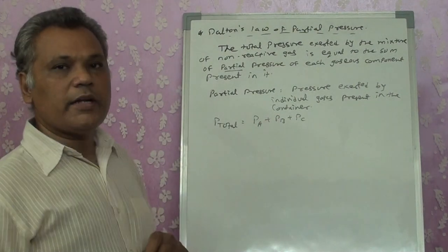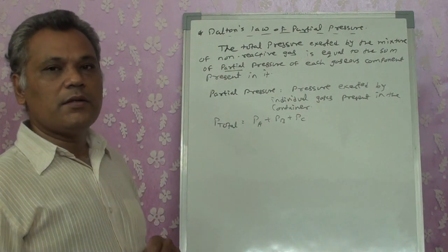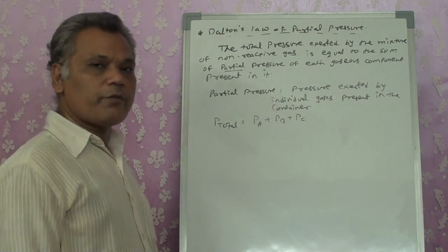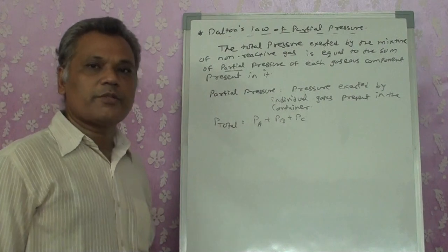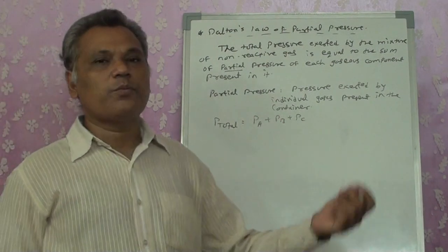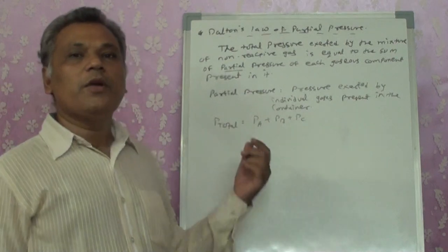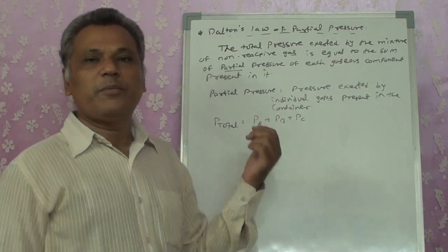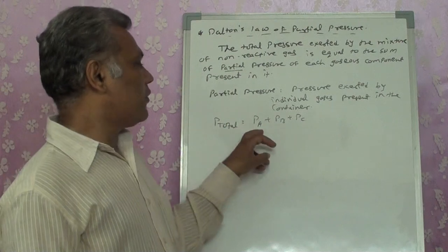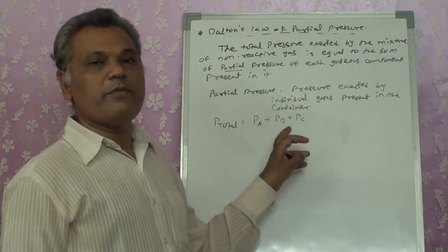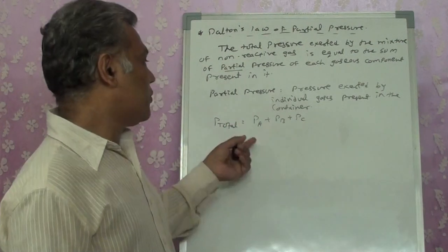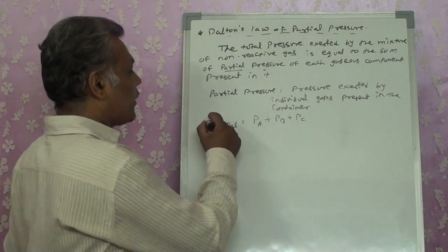So this law says: P_total inside the container equals the sum of partial pressures of different gases mixed together. We write it as PA plus PB plus PC — where PA is the partial pressure of gas A, PB of gas B, PC of gas C. You can also indicate them as P1, P2, P3. So P_total = P1 + P2 + P3. That is Dalton's Law of Partial Pressure.